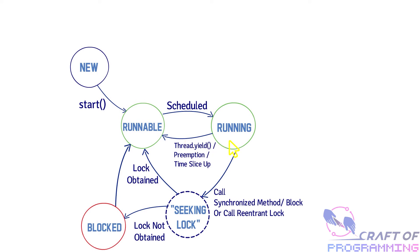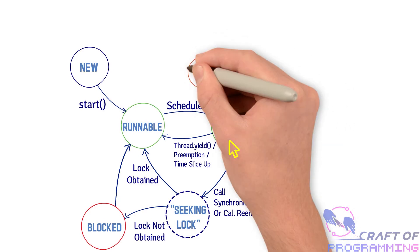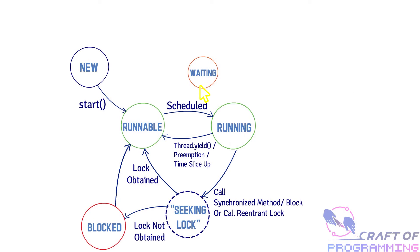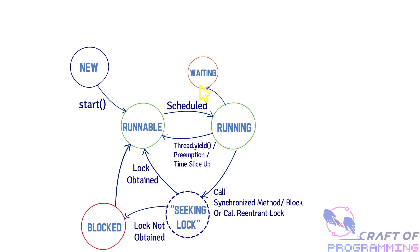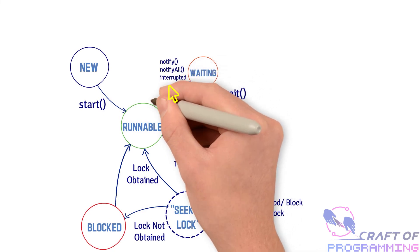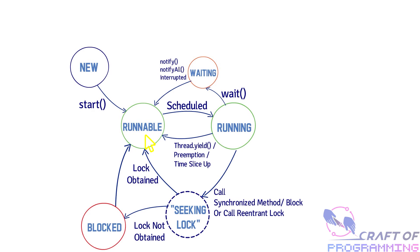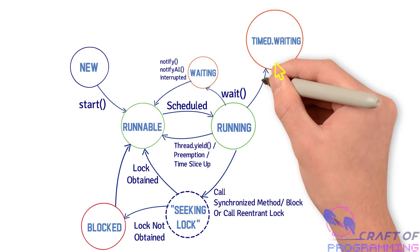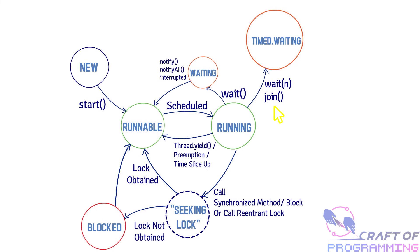From the running state, the thread may invoke wait() or a timed wait() explicitly. If the thread invokes wait(), it will go from the running state to the waiting state. While in the waiting state, the thread may be notified via notify() or notifyAll(), which moves the thread back to the runnable state, or the thread may be interrupted, which also moves it from the waiting state to the runnable state. Similarly, there is the timed waiting state, which occurs when the thread explicitly calls wait() with a timeout parameter or join(). When the timeout runs out, the thread is moved from the timed wait back to the runnable state.